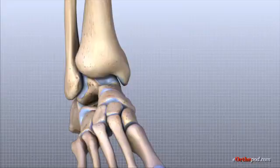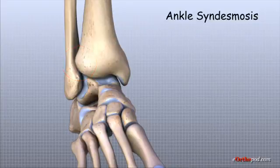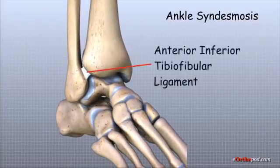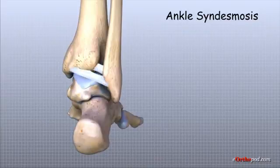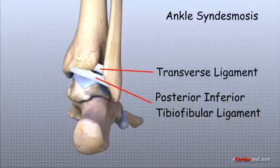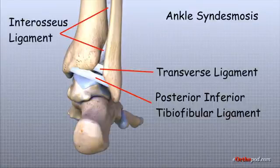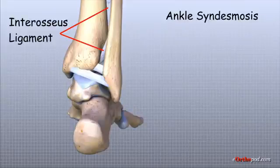This connection and the collection of ligaments that support it are called the ankle syndesmosis. Three main ligaments form the syndesmosis. The anterior inferior tibiofibular ligament connects the tibia to the fibula and crosses above the front of the ankle. The posterior fibular ligaments connect the tibia and fibula behind the ankle joint, and include the posterior inferior tibiofibular ligament and the transverse ligament. The interosseous ligament lies immediately between the tibia and fibula — interosseous means between bones — and is a long sheet of connective tissue that connects the entire length of the tibia and fibula from the knee to the ankle.